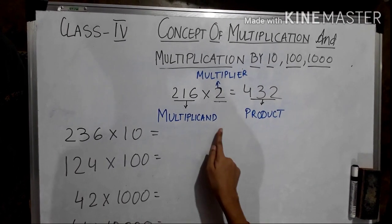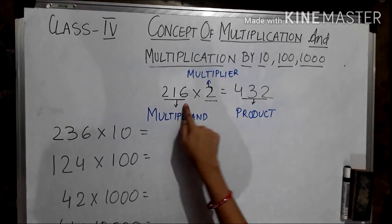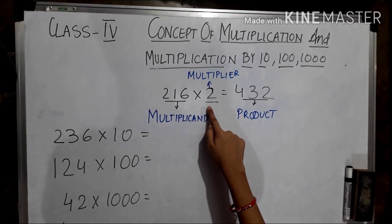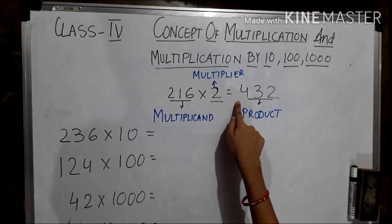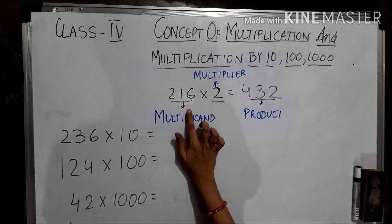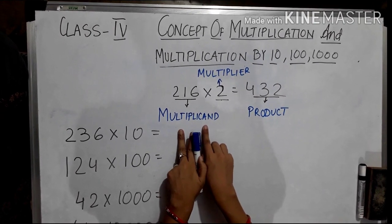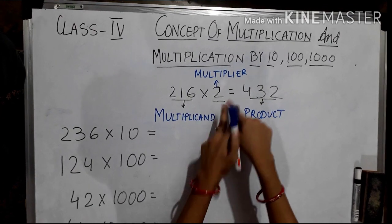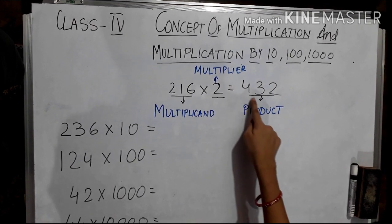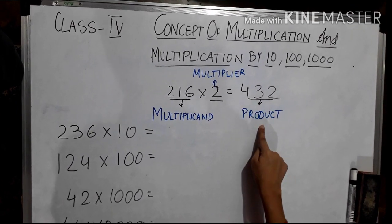Now let us take one example. 216 is multiplied by 2. The product is 432. Now this 216, we can say it as multiplicand. 2 is known as multiplier. 432 is known as product.